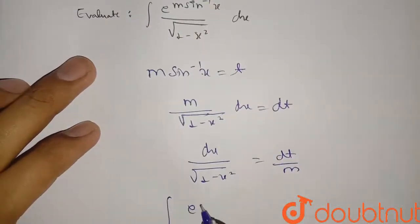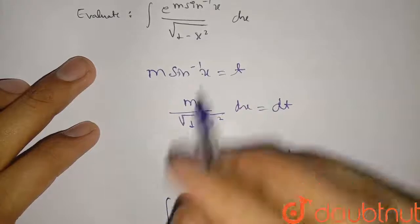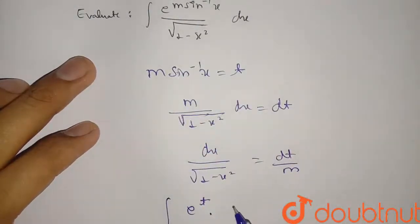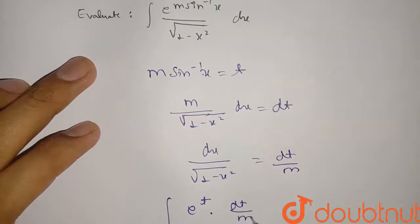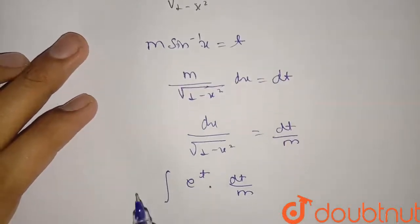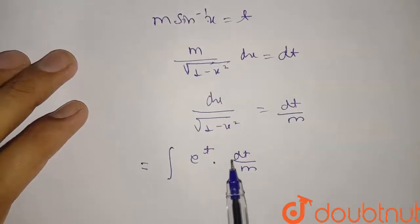And this dx by root of one minus x square is dt by m, right? dt by m. So this is our integration value final, right? So if we integrate this, so we know that integration of e raised to x will be e raised to x only.